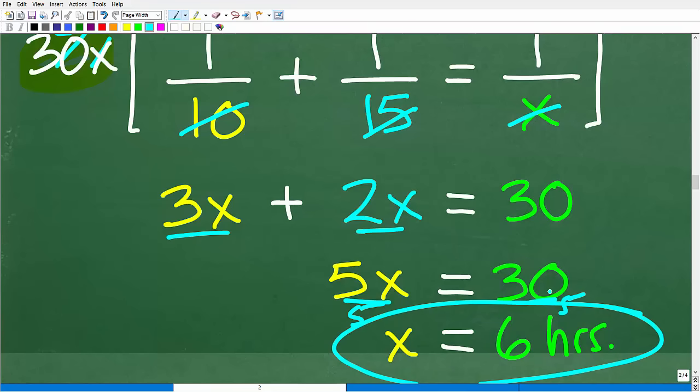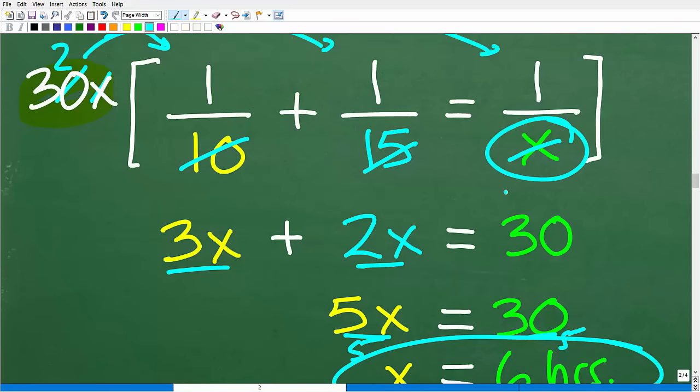So now this is super easy to solve. All we need to do is combine like terms. 3X and 2X is 5X. 5X is equal to 30. So all we need to do is divide both sides of the equation by 5. 30 divided by 5 is 6. So X equals 6 hours. That's the time together. Remember, X represents the amount of time together. And because these times are in hours, X is in hours as well.